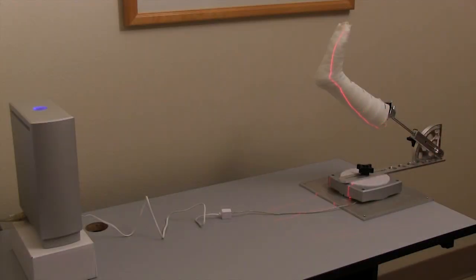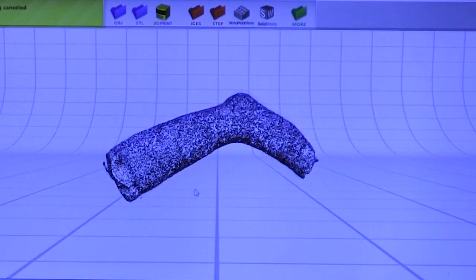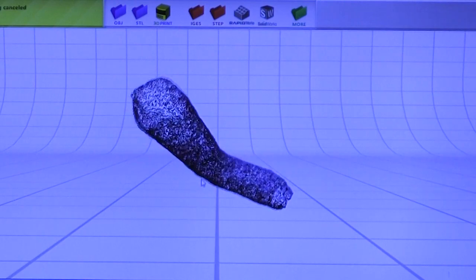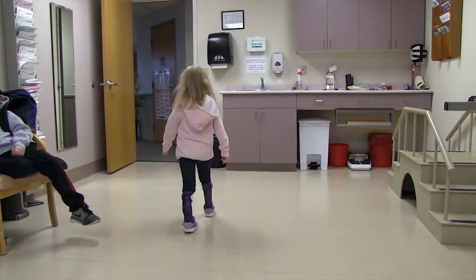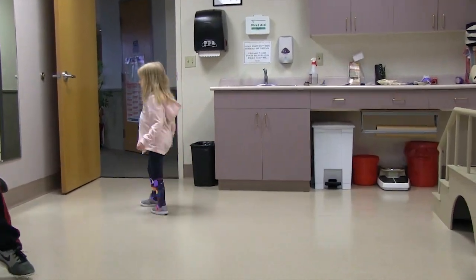Measuring cast thickness accurately is an important part of scanning. This allows us to accommodate for the overall volume so that we can make an accurate model that represents the patient's foot and ultimately a well-fitting brace. So let's get started.